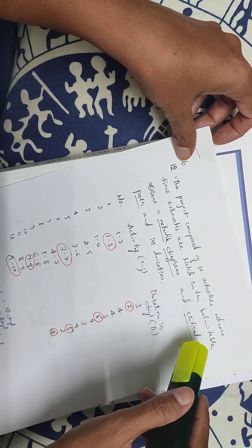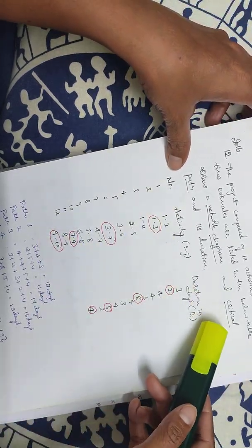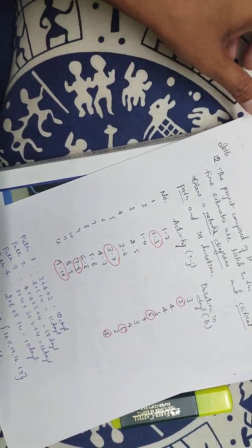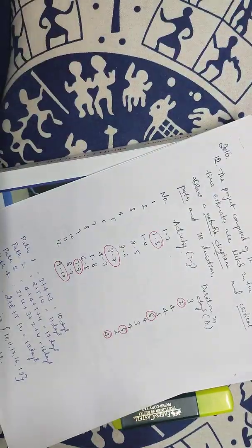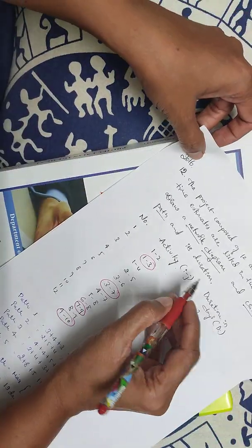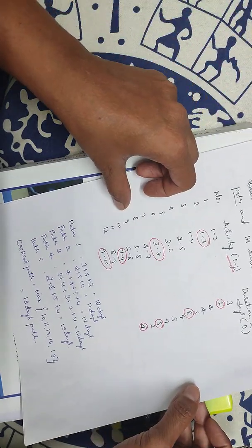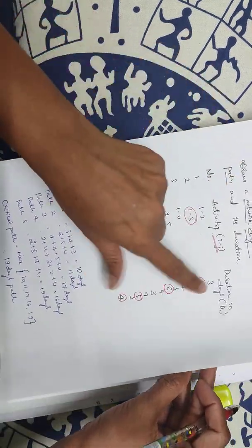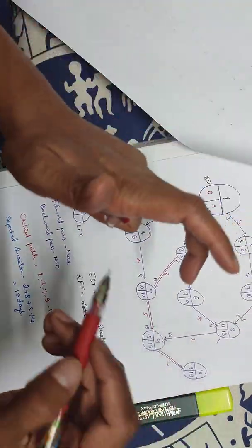The project is composed of 12 activities whose time estimates are listed in the below table. Draw network diagram, critical path and its duration. Number of activities are given, duration in days is given. Important thing is whether the duration is in days or weeks. The activity durations are in days.